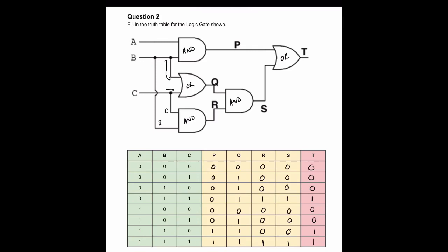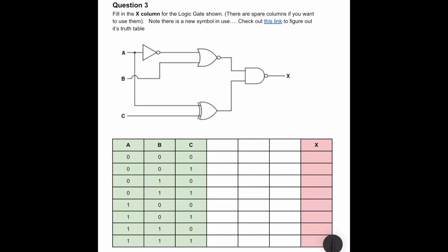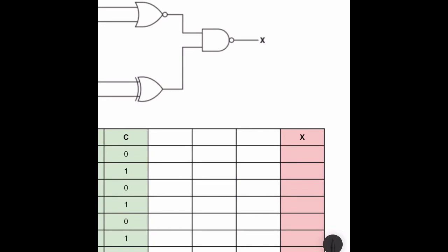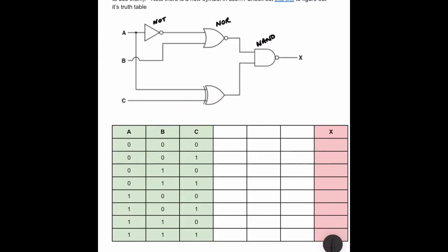In question three things get more complicated because we've introduced new symbols. We recognize the NOT gate which reverses the input. This symbol looks like an OR gate but has a little bubble at the end — we call this a NOR gate. A NOR gate takes the usual OR gate output and reverses it. Similarly, a NAND gate is an AND gate that's been negated, giving the opposite output of an AND gate. We also have an exclusive OR gate, which only produces a one if either input is one, but not if both inputs are one or both are zero.